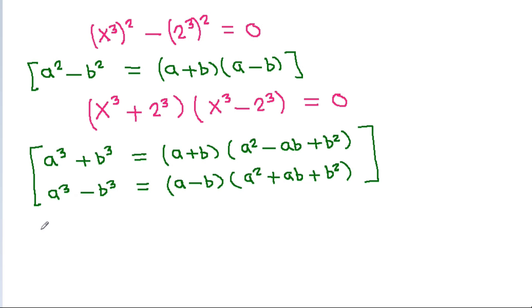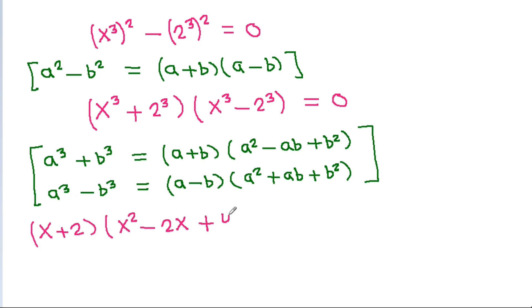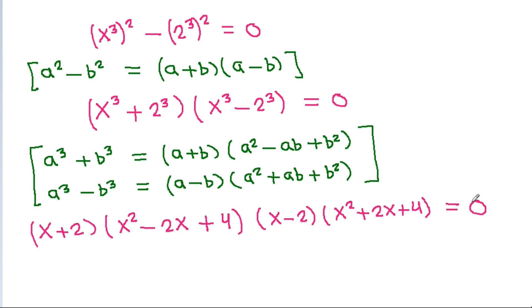Expanding x³ + 2³ gives (x + 2)(x² − 2x + 4), and x³ − 2³ gives (x − 2)(x² + 2x + 4) = 0.